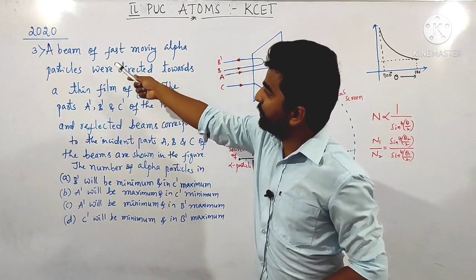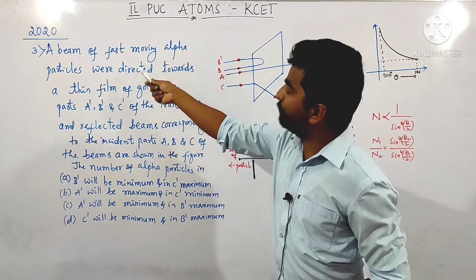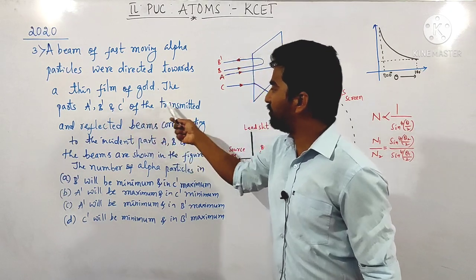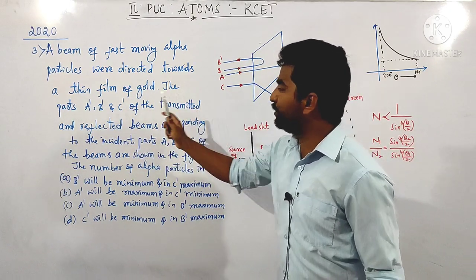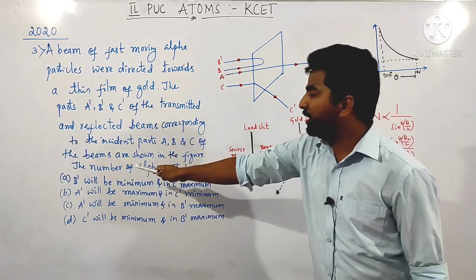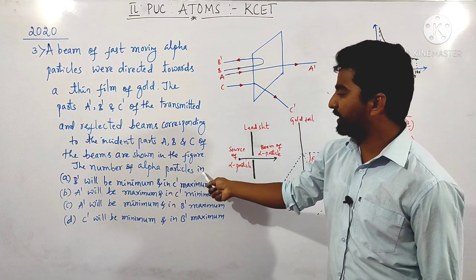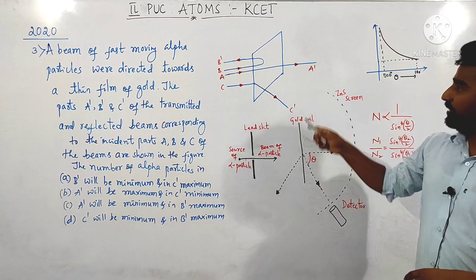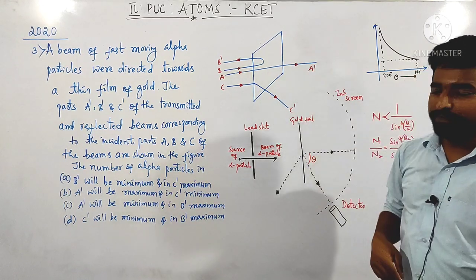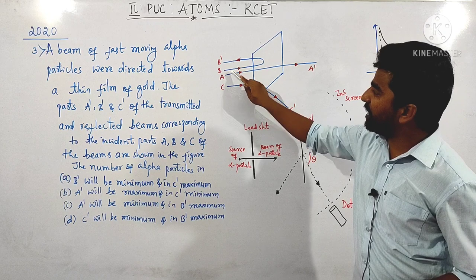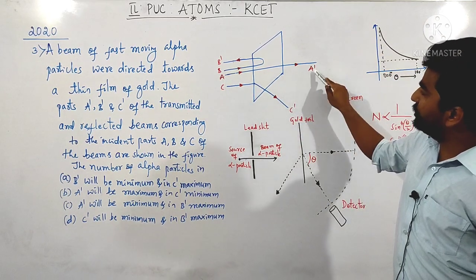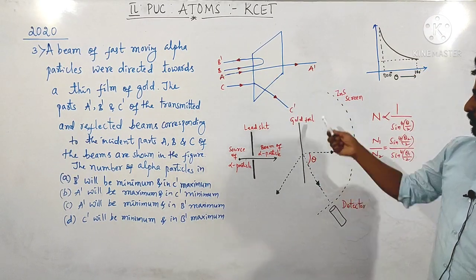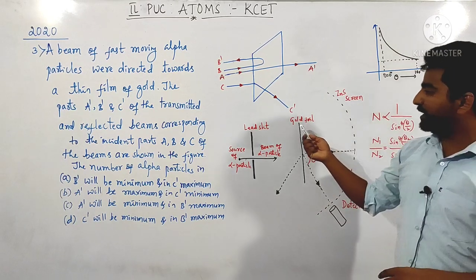Next question asked in the same year 2020: a beam of fast-moving alpha particles was directed towards a thin film of gold. The paths A, B, and C of the incident beams, and corresponding transmitted/reflected beams A dash, B dash, and C dash are shown in the figure. The question asks in which path the number of alpha particles is more and in which it is less.